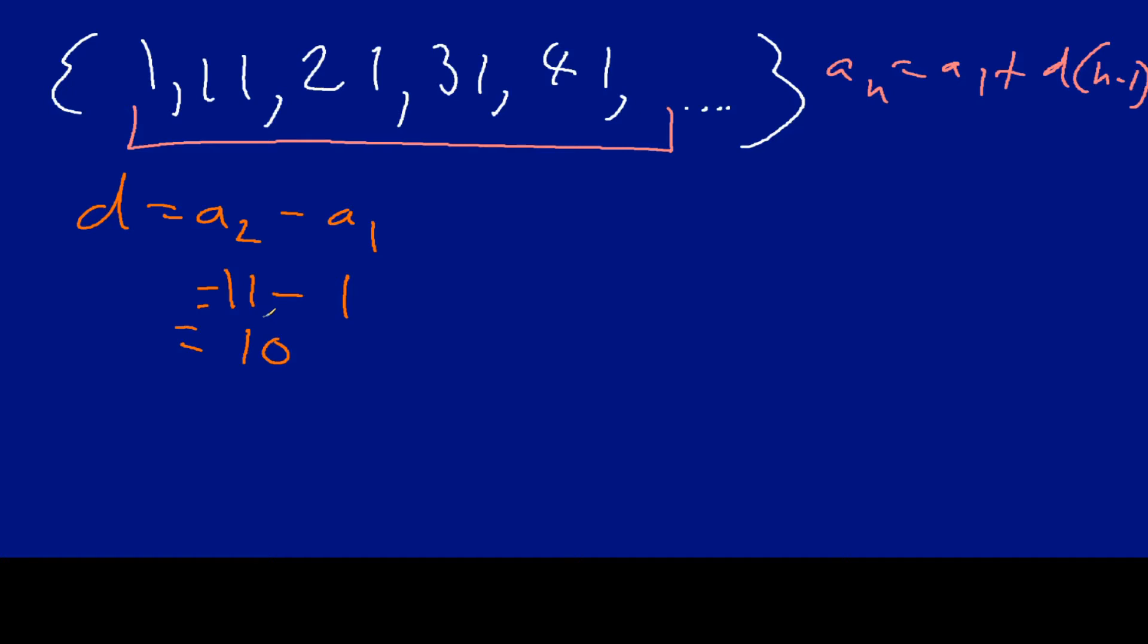Now, what we do is that we take what we know and we plug it in to our generic formula to find the explicit formula for this particular arithmetic sequence. So, we're going to have a sub n equals a1, a sub 1, plus, we got a 10 here, times the quantity of n minus 1.